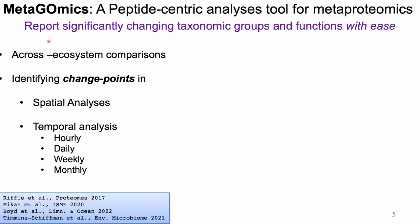Our team developed Metagomics, which is an open source peptide-centric analysis tool for looking at and analyzing metaproteomic data. It takes all of your quantitative peptide data and reports significantly changing taxonomy and functions, which is ideal for comparisons across ecosystems, or if you're trying to identify change points across space or time.